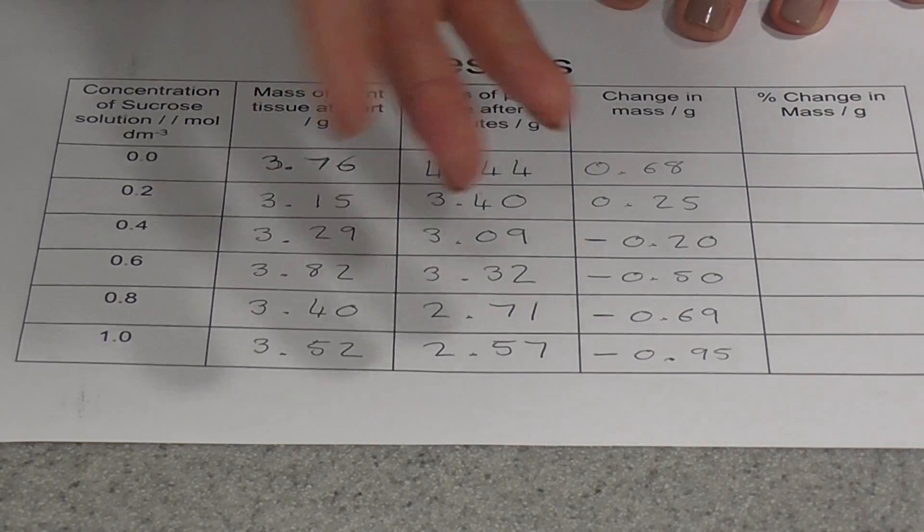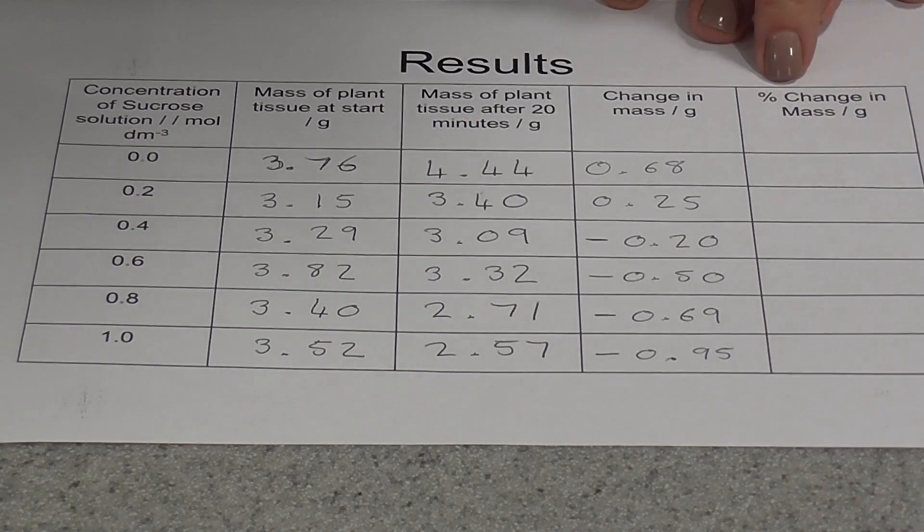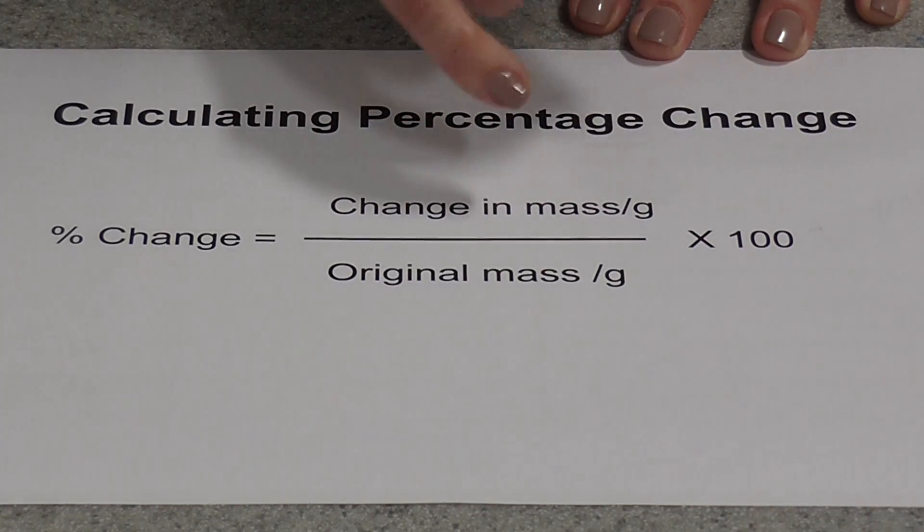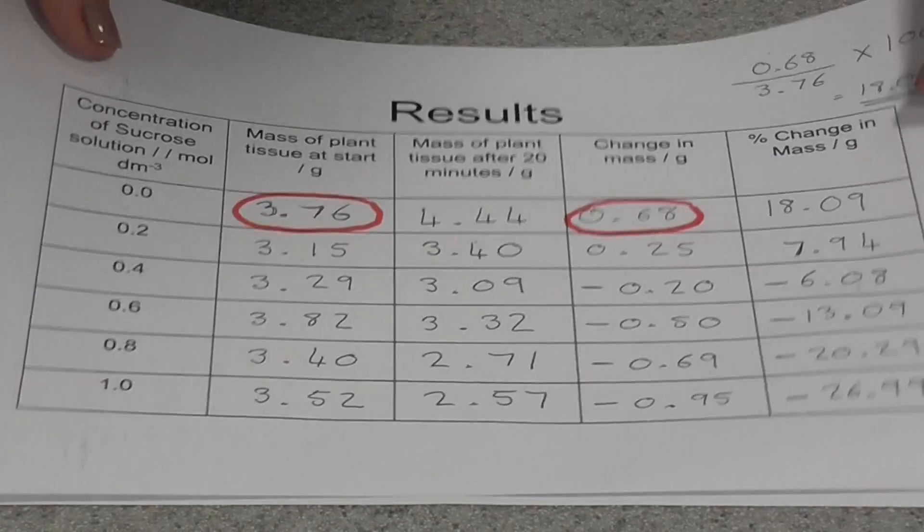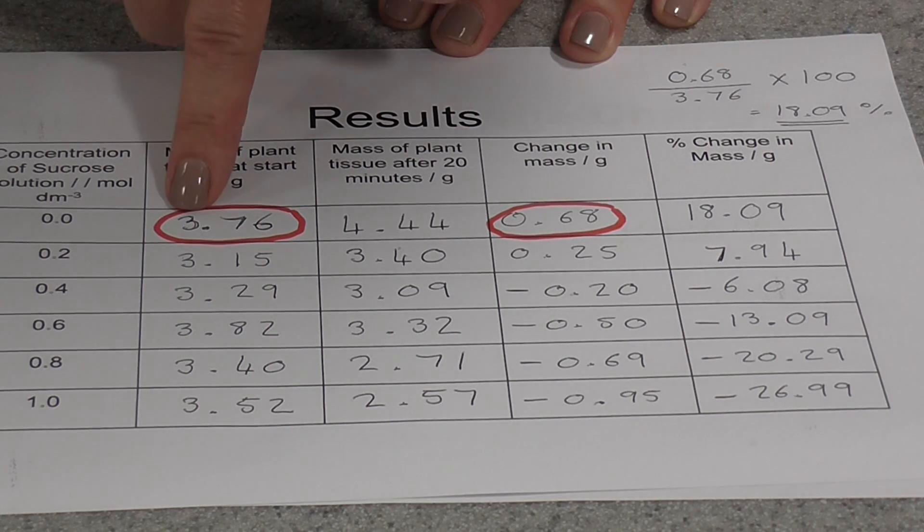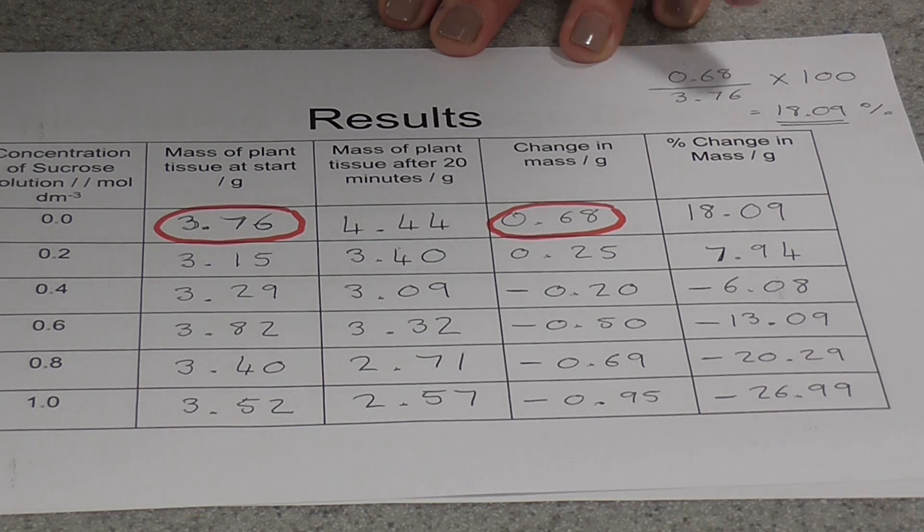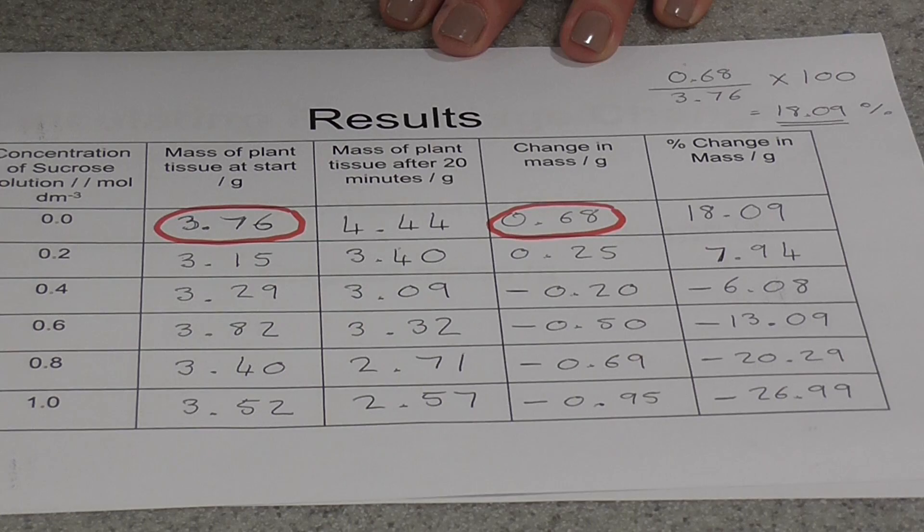If you want to compare the amount of mass gained or lost by the different chips, we're going to have to do a little bit more calculating. We're going to calculate the percentage change in mass. To calculate percentage change in mass, we use the change in mass, divide that by the original mass of the chip, and then multiply your answer by a hundred to turn it into a percentage. So I've done this here with the results. For the first chip, the change in mass was 0.68 grams, the original mass was 3.76 grams, so I'm going to divide 0.68 by 3.76, multiply it by a hundred, and you'll see that the change in mass of the first chip was 18.09 percent. You're going to do this for all of the chips, making sure that you're aware that some of them are minuses, some have lost a certain percentage of weight.